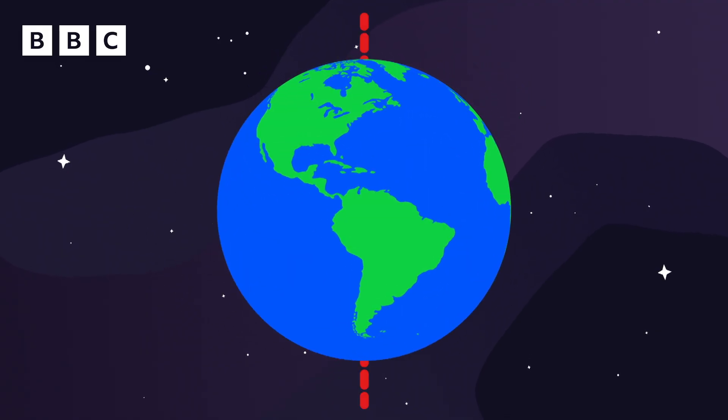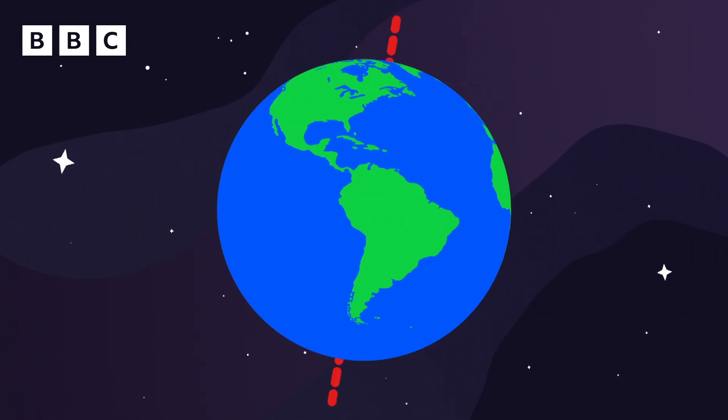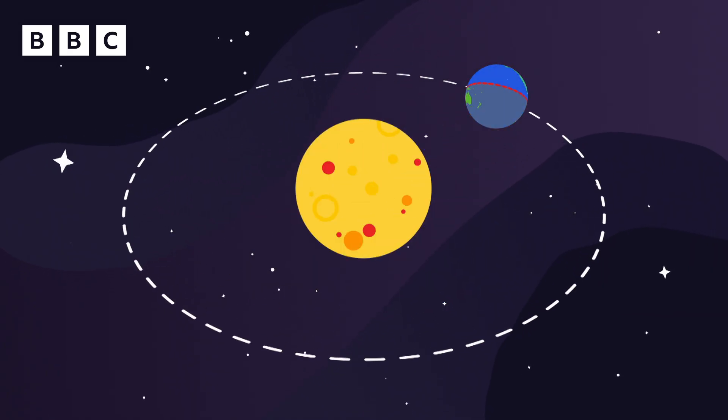Planet Earth has an invisible line through it called an axis. When the Earth orbits around the sun, it doesn't stand upright, it tilts on its axis. For part of the year, one half of the Earth, which is called a hemisphere,